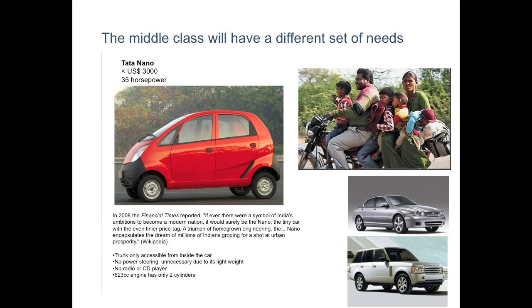They'll also have a different set of needs. On the upper right, there's a family of six — for the longest time, a motorcycle was the only means of transportation. But their aspirations have changed. They can now afford a four-wheel vehicle — not a fancy Mercedes, just a car that takes them from point A to point B. Tata's Nano was designed with precisely these people in mind. The change is not in the objective, but in the way that objective is met. This is synonymous with what's happening on the medical technology side as well.